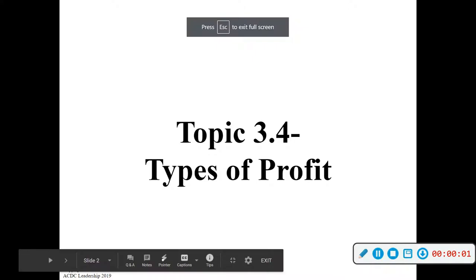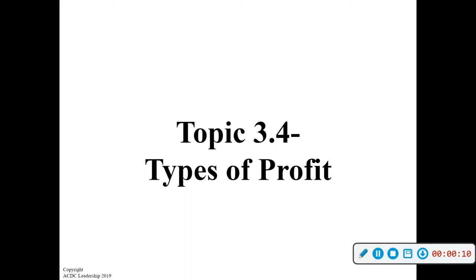Section 3.4 introduces two types of profit. It doesn't come up on the test when it talks about implicit and explicit cost. I'm going to introduce it as accounting cost and economic cost, but usually they don't refer to that as much.